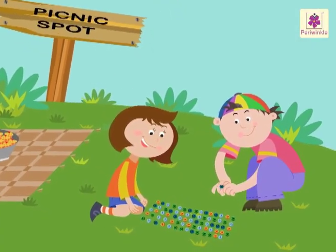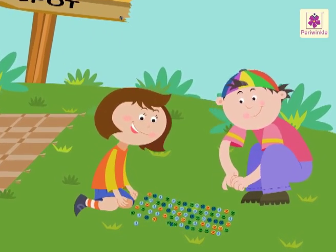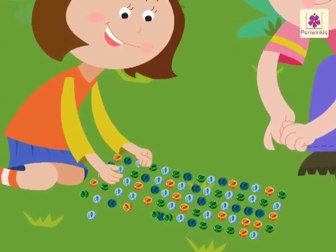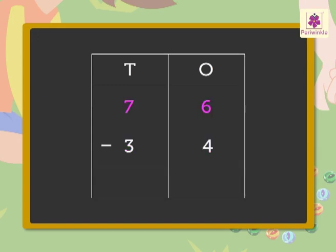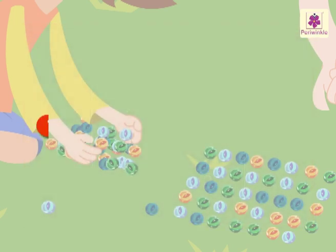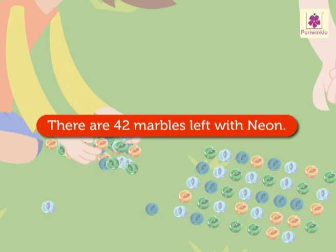Look, Nancy and Neon are playing with marbles. Neon has 76 marbles. Nancy takes 34 marbles from him. How many marbles are left with Neon? We have to subtract 34 from 76 to find the answer. We always subtract the ones first and then the tens. Six minus four is equal to two, seven minus three is equal to four. Thus the difference of 76 and 34 is 42. There are 42 marbles left with Neon.